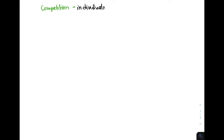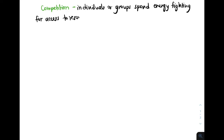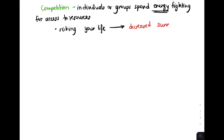Now, what really is competition? Competition is when individuals or groups spend their energy fighting for access to resources. This is bad because both sides are losing — they both risk their life, and rather than spending time reproducing, these organisms are spending energy competing for food, shelter, and space. Because competition causes organisms to be less likely to survive and reproduce, natural selection selects for traits that decrease competition.